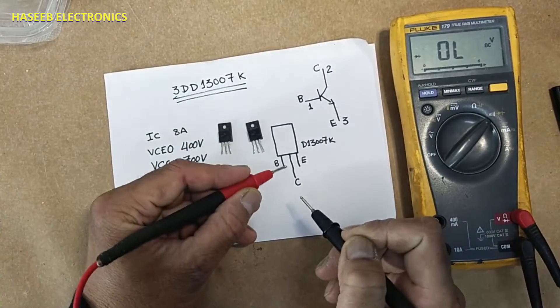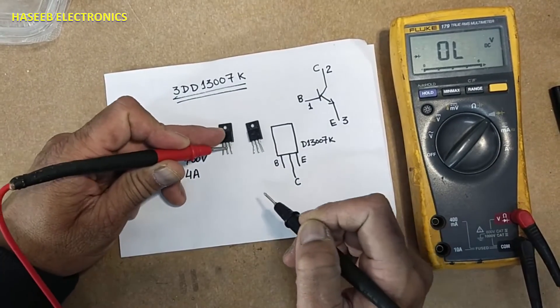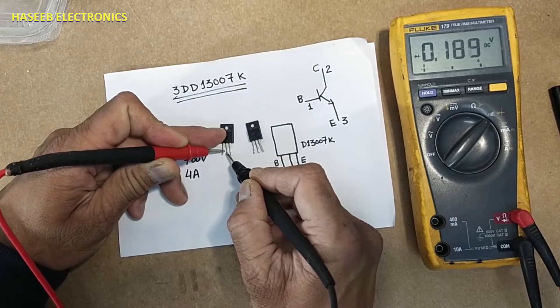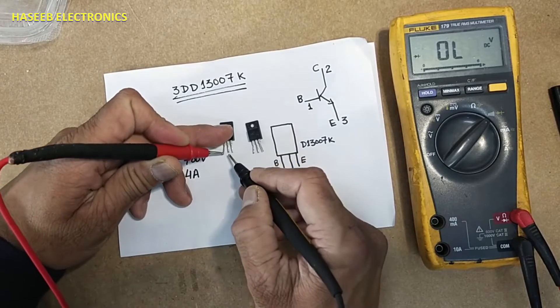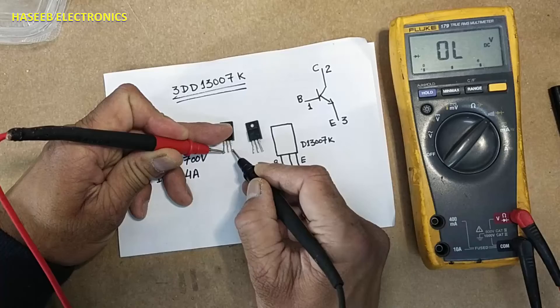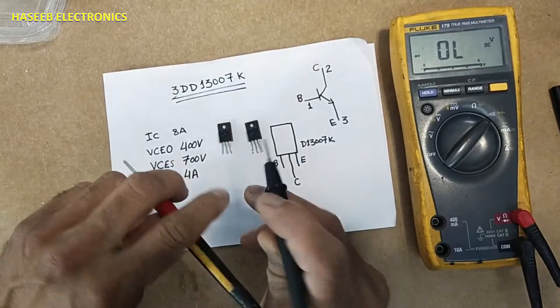NPN transistor, left side base. This transistor is bad, it is short circuited.